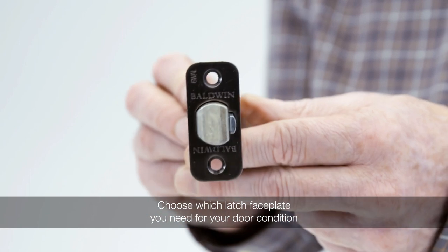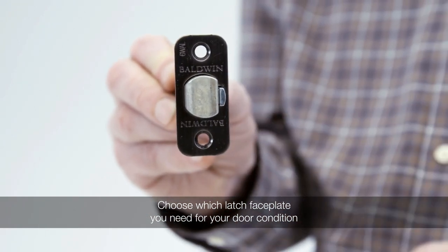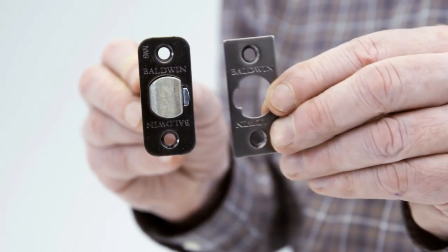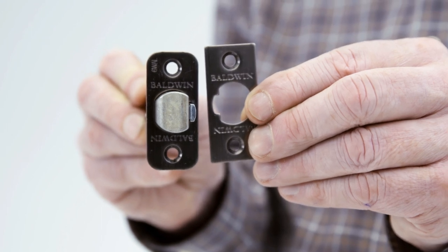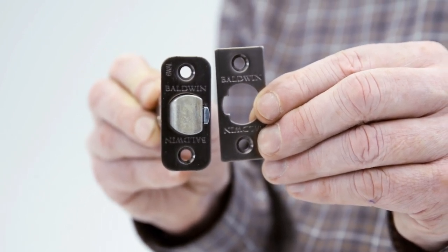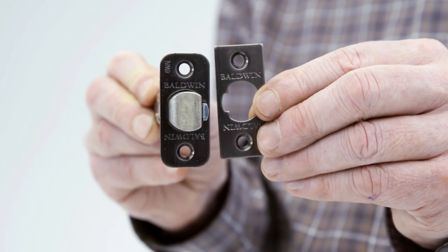Choose which latch faceplate you need for your door condition. If you need to use the square faceplate, remove the radius corner one and snap the square corner faceplate to the backplate. In this install we will be using a radius faceplate.